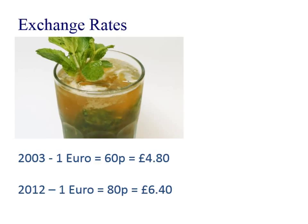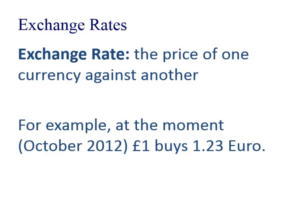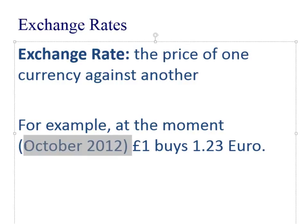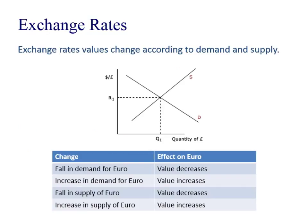An exchange rate is basically just the price of one currency against another. Exchange rates are determined the same way as in unit one — through demand and supply. It's the demand and supply of a currency that determines the exchange rate.